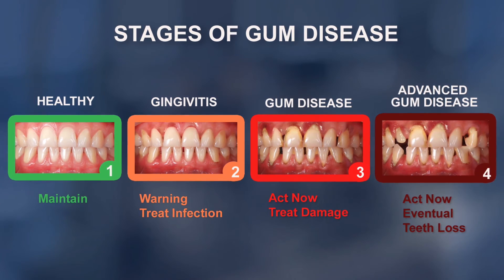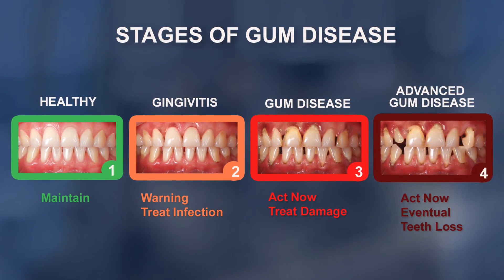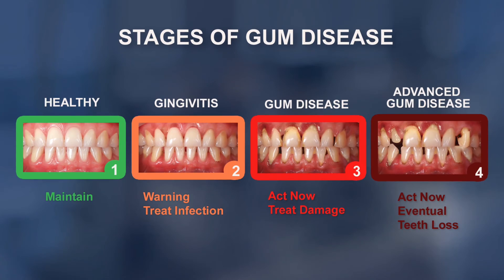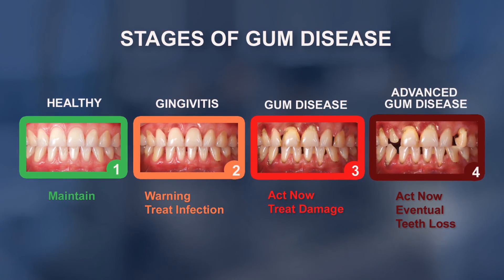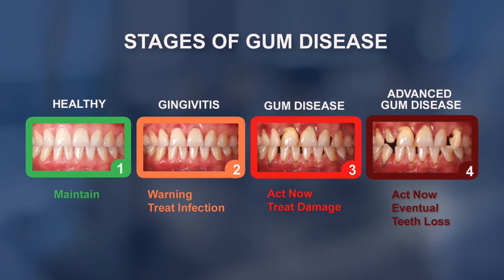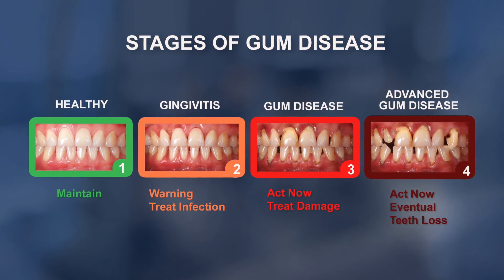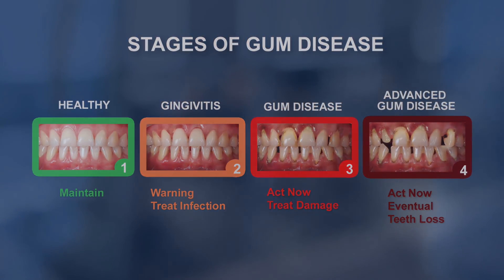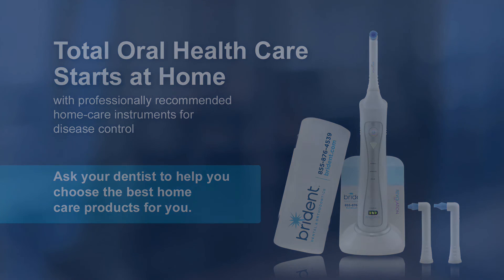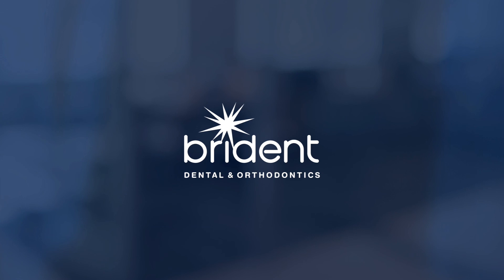In all cases, gum disease is a treatable condition and if detected early on can be reversed with good patient home care and periodic recall visits. The more advanced forms of gum disease cannot be fully reversed, and treatment becomes costly and time-consuming. Your doctor will recommend the most effective course of treatment for your particular condition. Total oral health care begins at home — your doctor can suggest professional quality home care tools that will help you maintain healthy gums and a bright, beautiful smile.